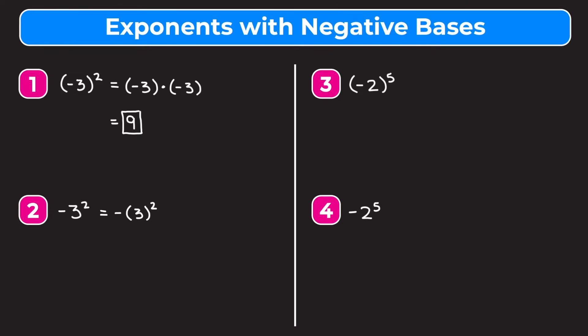The negative is not inside the parentheses — it is not being raised to the second. Order of operations tells us that we have to square this 3 first, so it's negative and then we're really multiplying 3 by itself. This negative just stays on the outside. When we multiply 3 by 3 we get 9, and we have this negative on the outside, so we get negative 9 as our answer instead of positive 9.